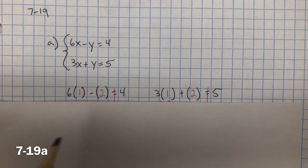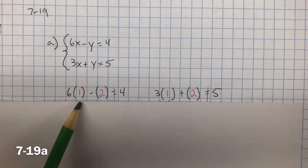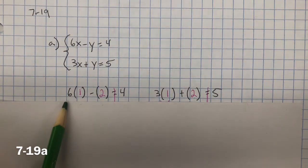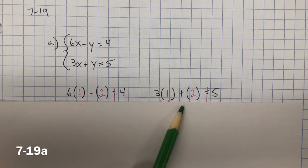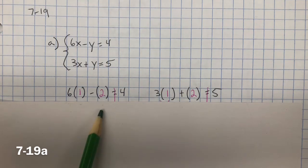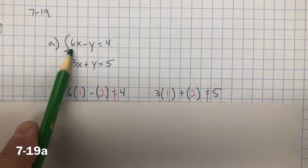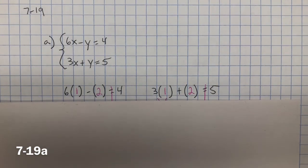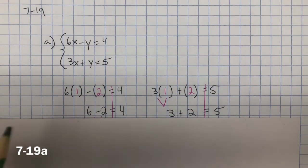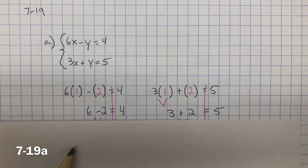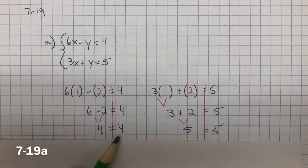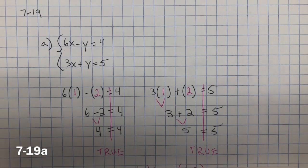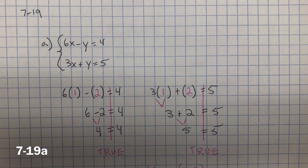The one that matches this system is 1 for x and 2 for y. I put both of those into each of the equations, into the top equation and the bottom equation, and I solve both of those equations. I simplify, and it ends up being 4 equals 4 and 5 equals 5. Since both are true, the solution to this system is 1 comma 2.